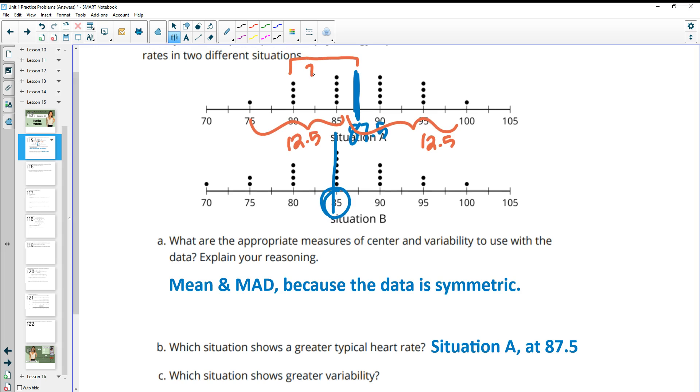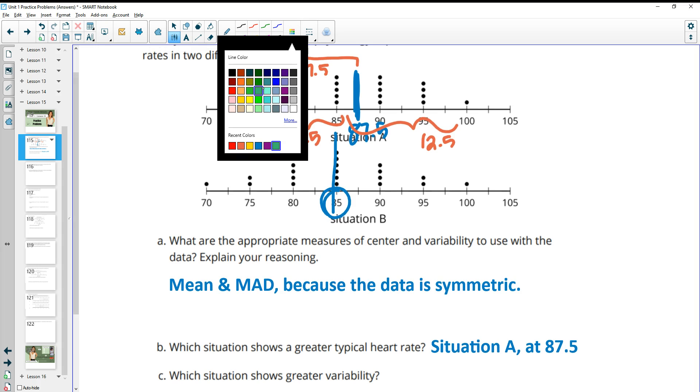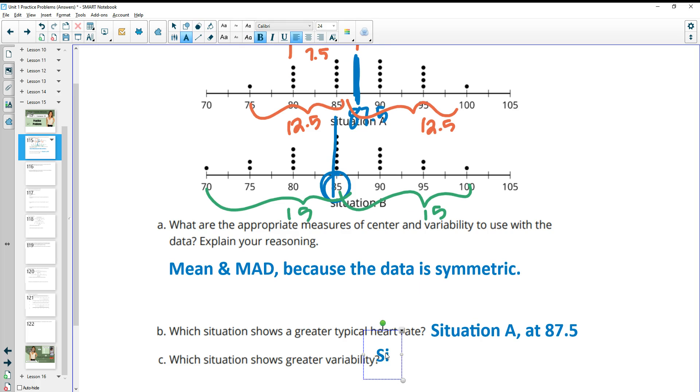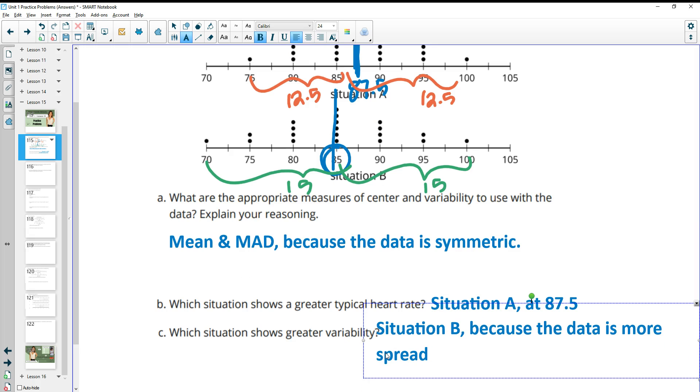And then when we look at this situation, you do have data down here, right at 15 away from the mean, and then 15 away from the mean. So that's really a wider distribution, meaning more variability. So we're going to say situation B because the data is more spread out.